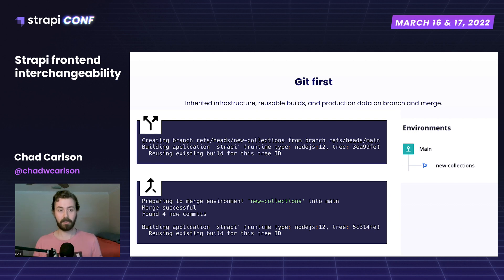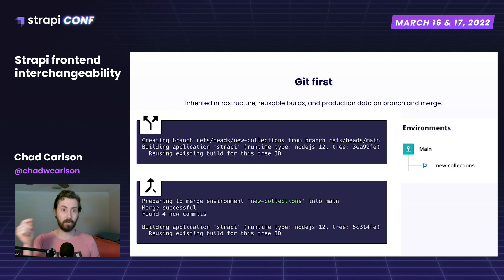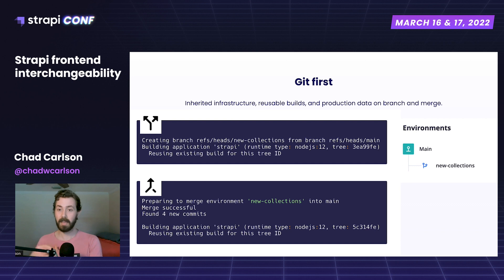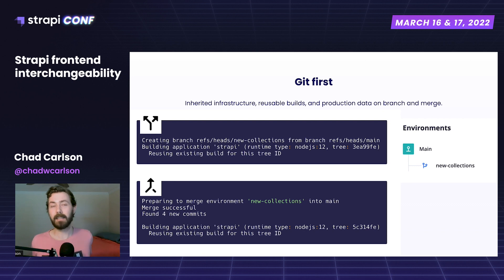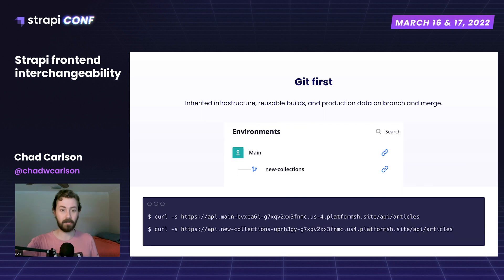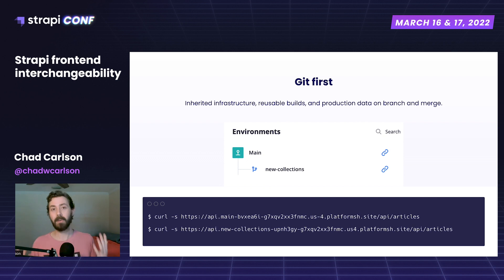That means any tests we run give us a really accurate picture of behavior in production, because it is the exact same copy until we make another commit. The same assurance works in the other direction too — when merging new collections into the production environment, we reuse the build based on the tree ID from the isolated environment where all tests were run and QA signed off. We literally just move that same image into production. So if I take curls of both environments at an article endpoint, the data will be identical until we make a change.